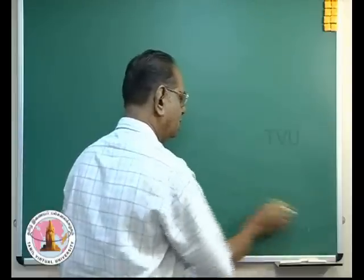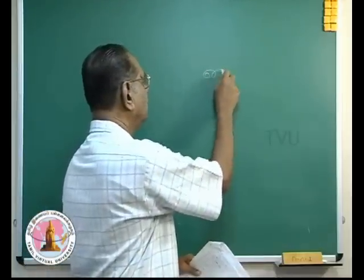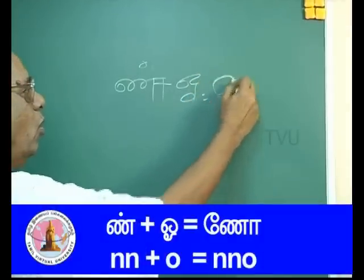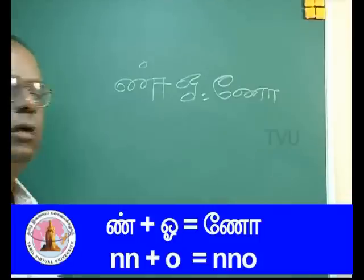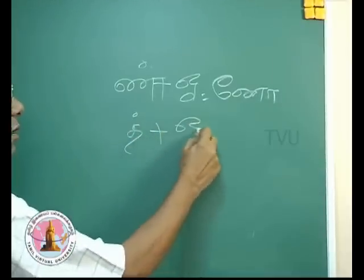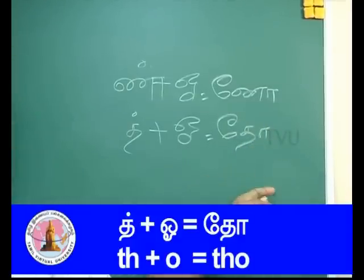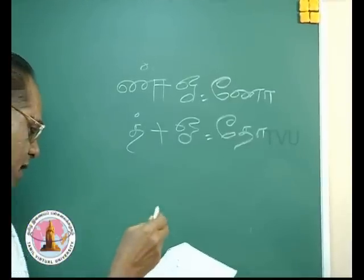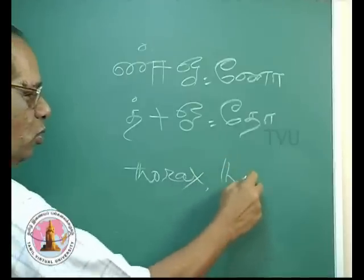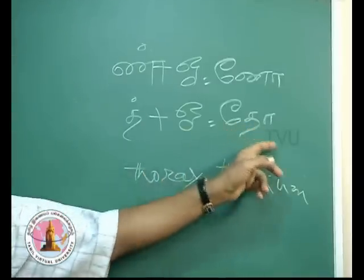These letters have been arranged in such a way that a hard sound is followed by a nasal sound, and that nasal is 'Na'. Then we have the consonant plus O giving 'No'. We have also done the dental consonant plus O giving 'Toe', as you have in 'Thorax' or 'Thorium'.